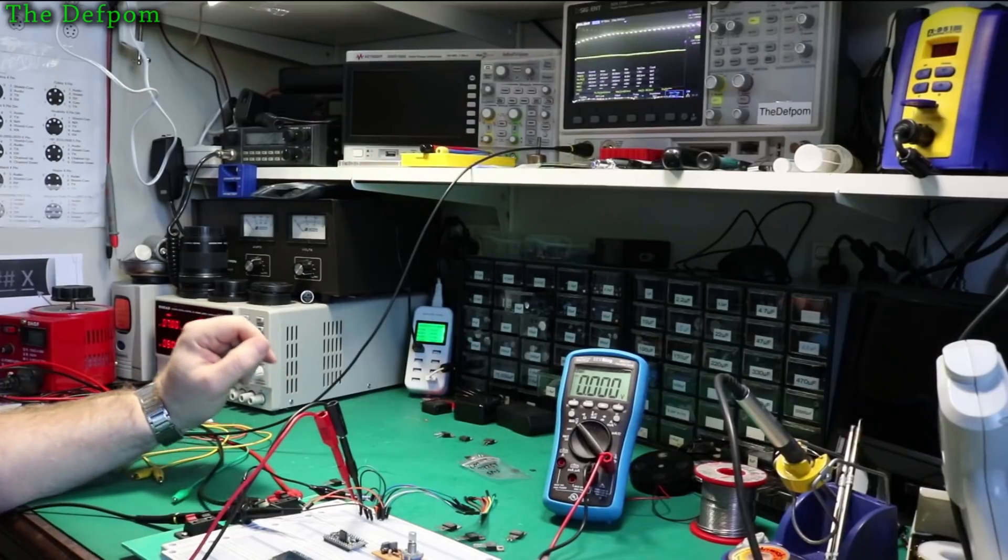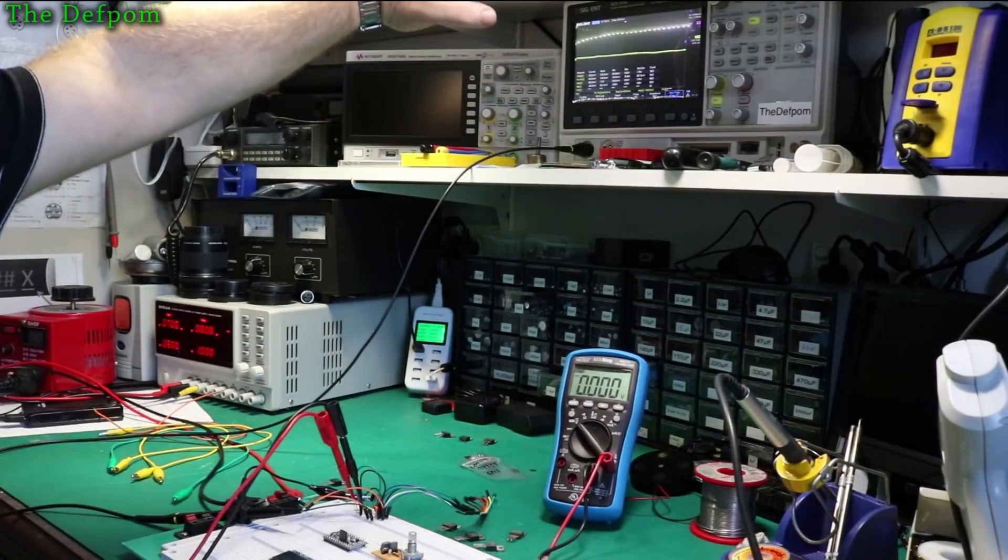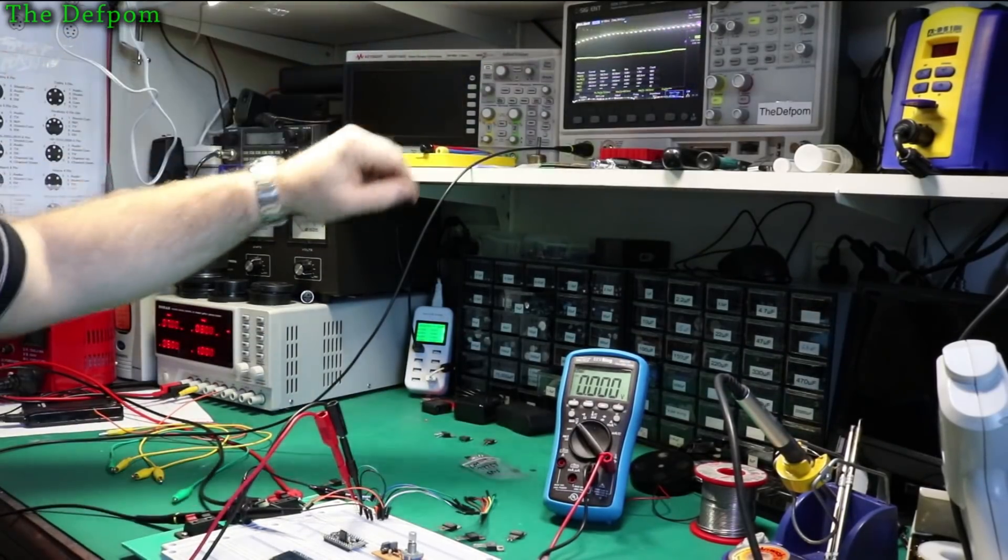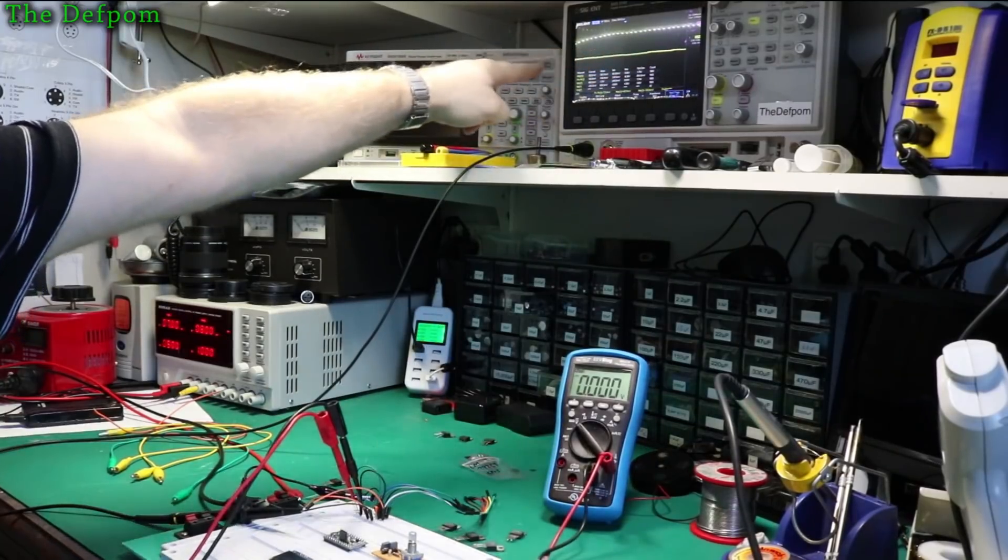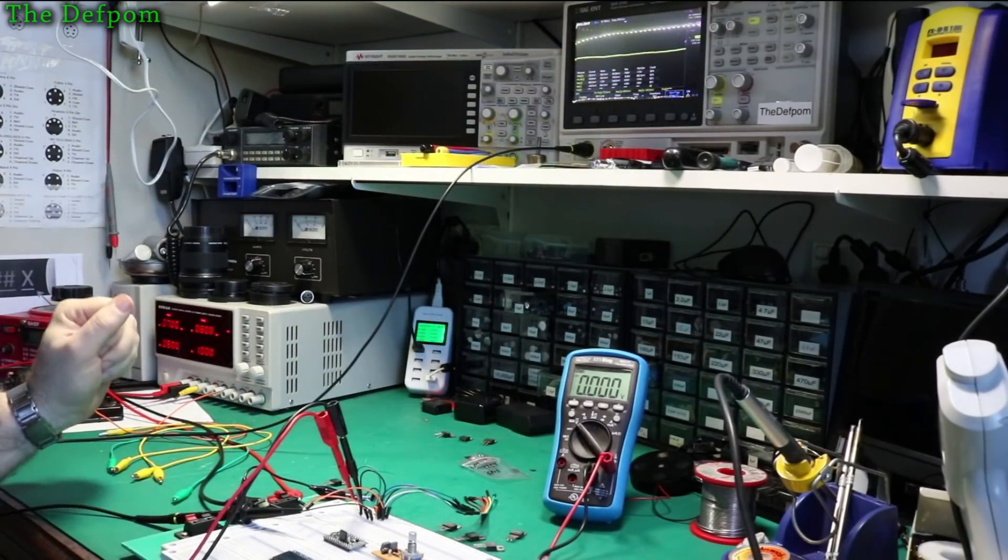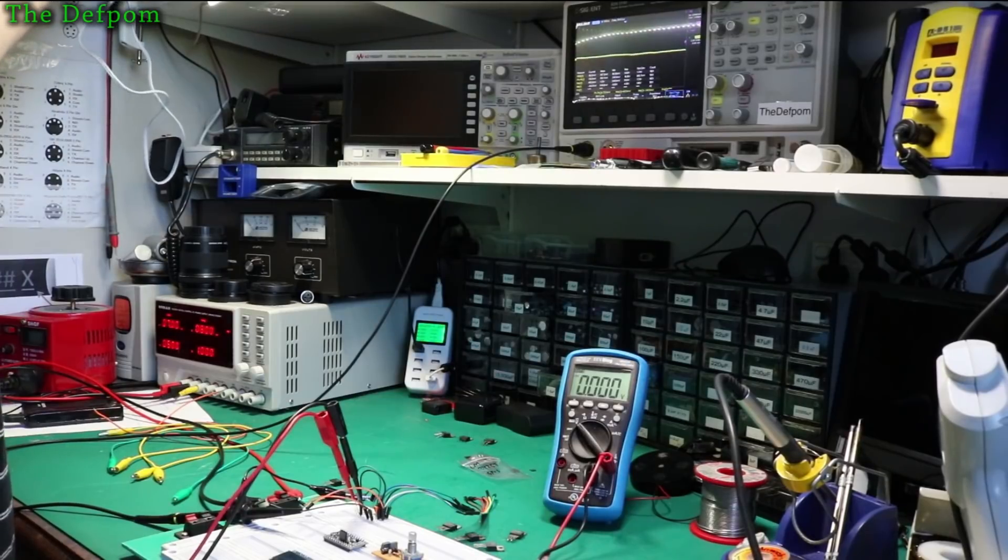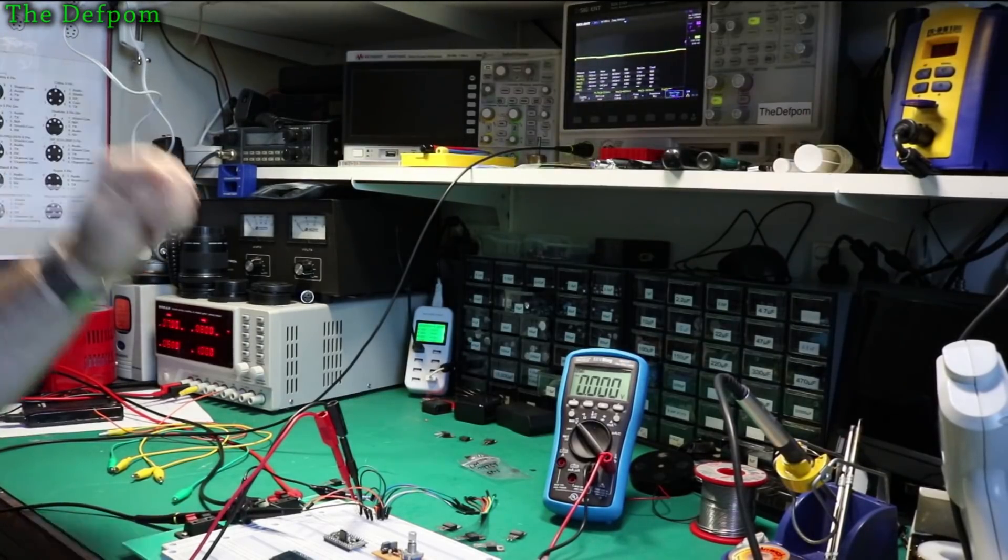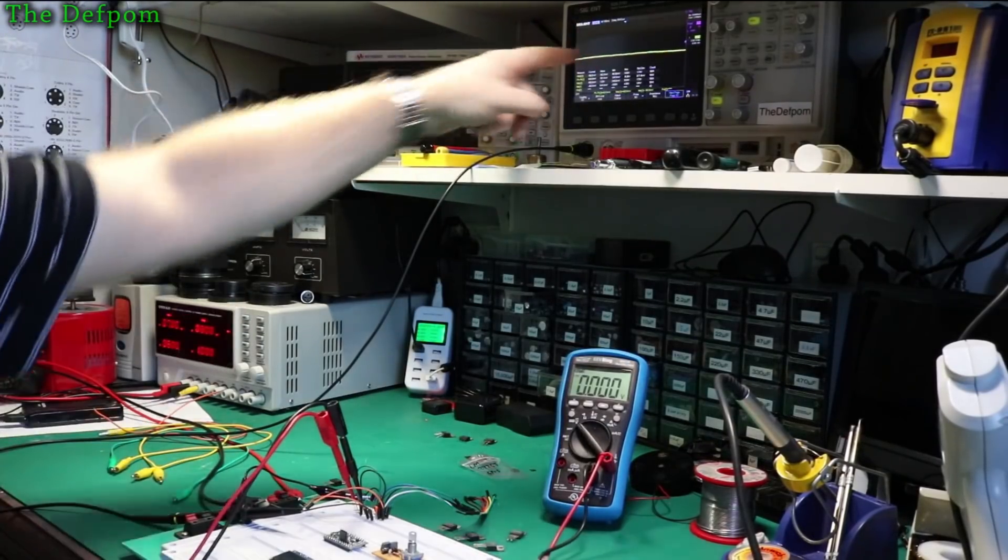So I thought I'd just show you that really. I've got these bloody lights reflecting on the scope screen there, but I've got this set to DC coupling and actually I might turn those lights off. Right, there you go, so all you need to see is the screen anyway.